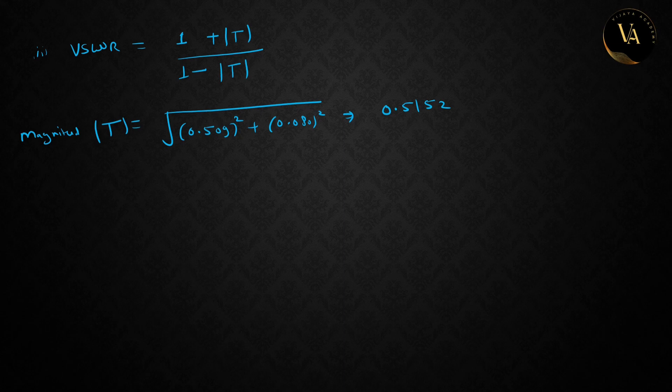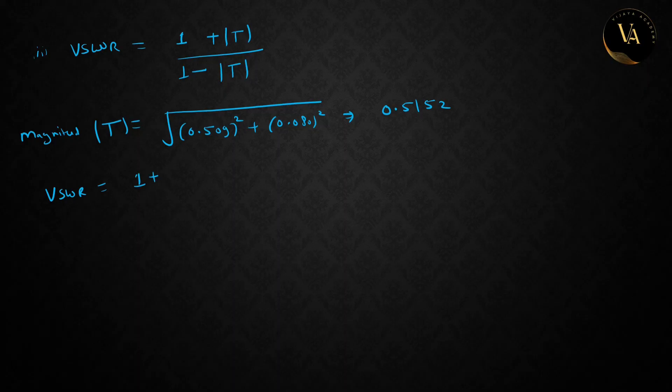Now putting the value, VSWR equals 1 plus 0.5152 divided by 1 minus 0.5152. So VSWR is 3.12, our final answer.